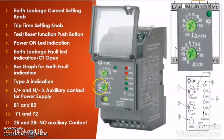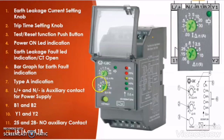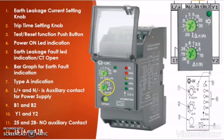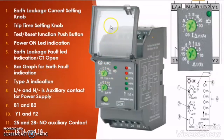The second thing which you will find on the earth leakage relay is a trip time setting knob. Here you can see there is a setting from 0 seconds to 10 seconds. If we adjust this knob to number 5 then this knob will have a time setting of 5 seconds. If the current setting knob is at 10 Ampere, the earth leakage relay will not trip if there is a current of 10 Ampere or more for less than 5 seconds.